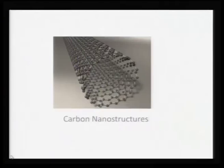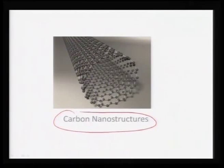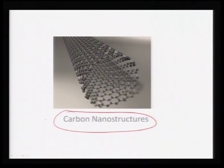In this lecture, we will learn about carbon nanostructures. Carbon is one of the most abundant elements on earth and forms a basic form of life. There are many polymorphs of carbon which are available, and eventually they go into forming nanostructures. We will learn about certain of those nanostructures which belong to carbon in this lecture.